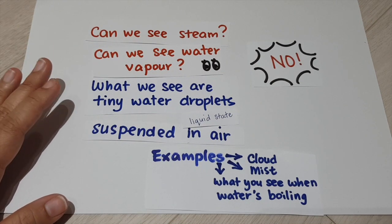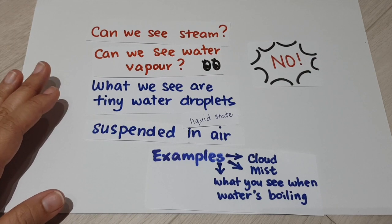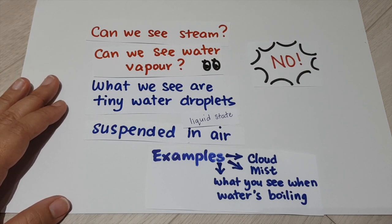These are what we learned today. Remember, you cannot see steam, you cannot see water vapor. You can only see water in liquid state or in solid state, which are ice or in liquid state. It can be tiny water droplets, it can be just water in your water bottle, for example.